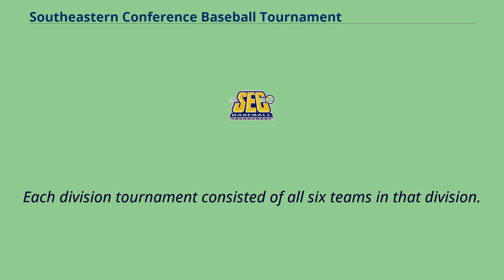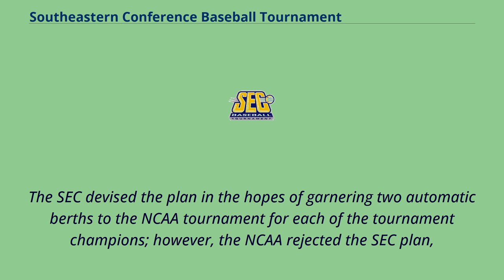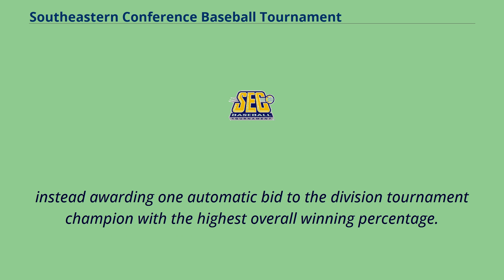Each division tournament consisted of all six teams in that division. The SEC devised the plan in the hopes of garnering two automatic berths to the NCAA Tournament for each of the tournament champions; however, the NCAA rejected the SEC plan, instead awarding one automatic bid to the division tournament champion with the highest overall winning percentage.